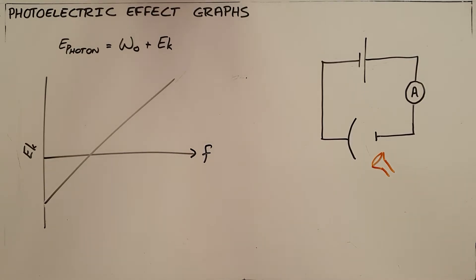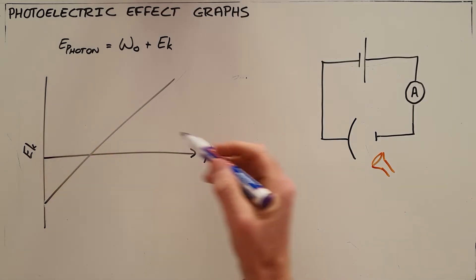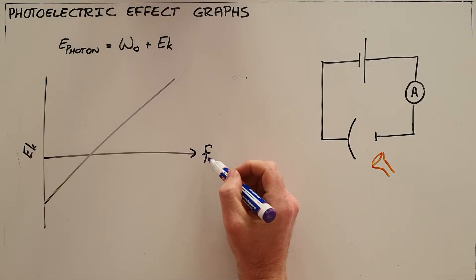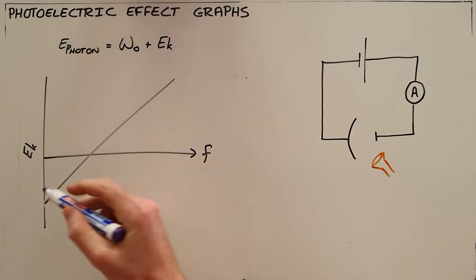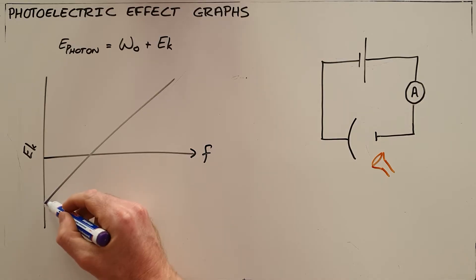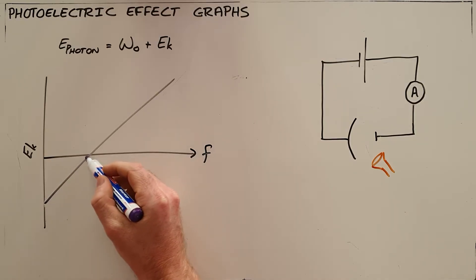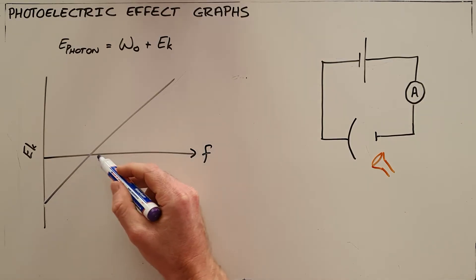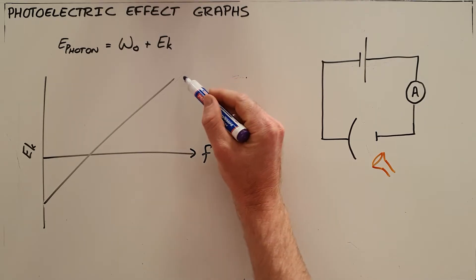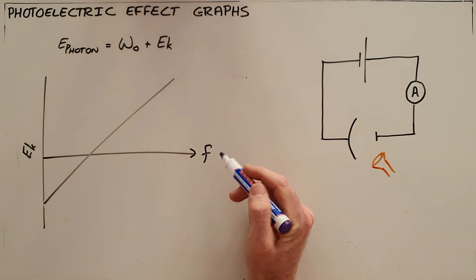One of the most common graphs that we come across in the photoelectric effect is the graph of kinetic energy against frequency. What we can see is that the graph starts out negative as the frequency increases, then eventually becomes positive and continues to increase with the frequency.